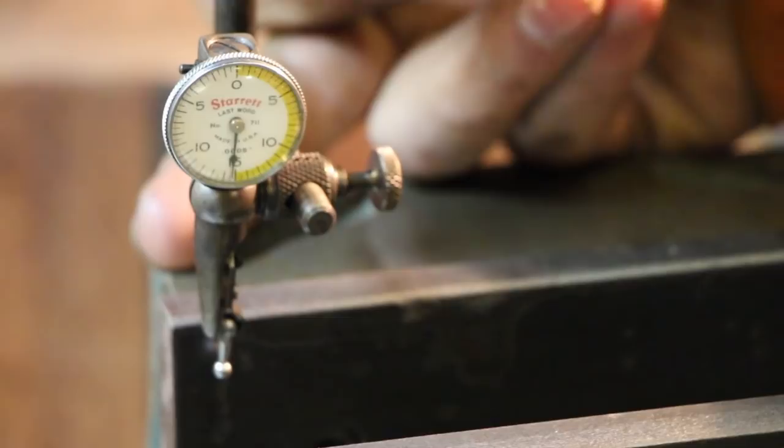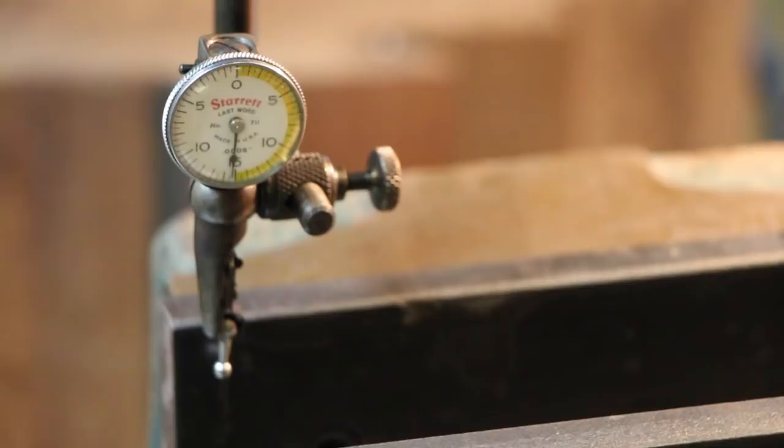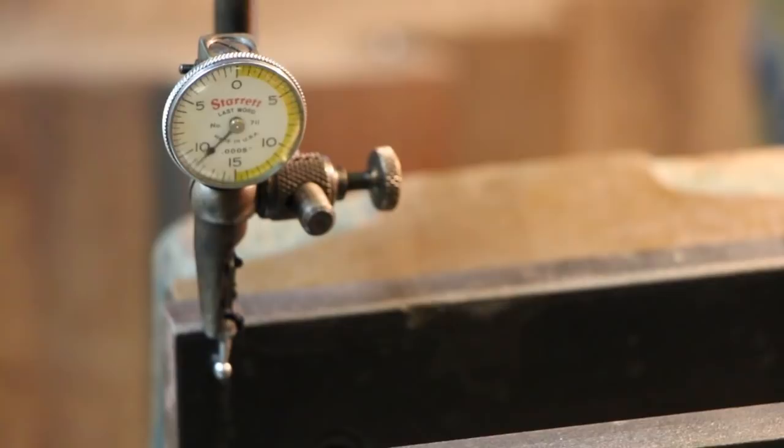So I have my vise cranked over to the very edge of the vise on one side or the other. It really doesn't matter which side, but one side or the other, because you want to measure as much travel as you can. What I'm going to do is I'm just going to use the cross slide and I'm going to pull this out until it touches and I'm going to set that indicator on zero.